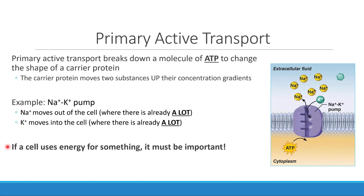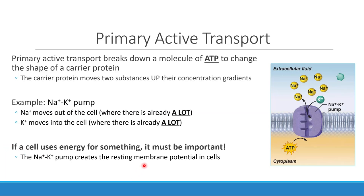The reason our cell does this is to build that resting membrane potential. Underline, highlight, and star this: if a cell uses energy to do something, it must be important. Your cells are really good at only spending their energy money on things they actually need — unlike Dr. Aulis, who has an Amazon addiction and buys things she doesn't need. If I were a cell, I would only spend my energy money on necessities. What makes primary active transport a necessity is generating that resting membrane potential.